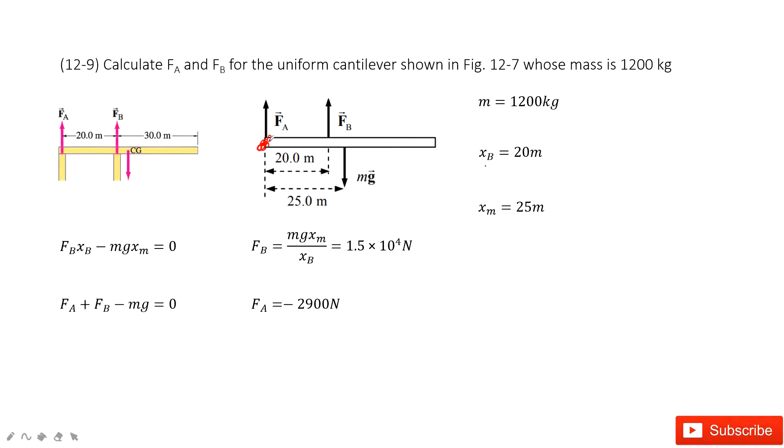Now to make this system balanced, we need to make sure the net force is zero. FA plus FB minus MG is zero. And then net torque is zero. So FB times XB minus MG times XM equal to zero.